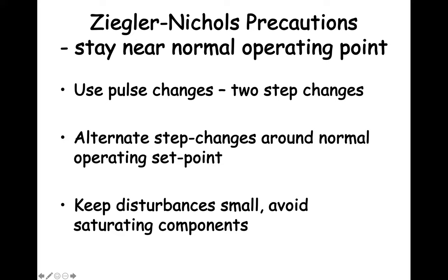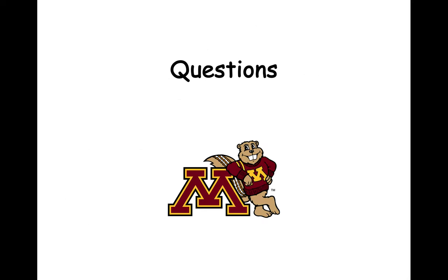When working with real industrial processes, it is important to take some precautions. Here are three recommendations when adjusting a process to collect data to be able to use the Ziegler-Nichols method. Pulse changes are recommended — when you step up to create one step change and step down to create a second step change, by alternating step changes around the normal steady state conditions, you avoid getting far from normal conditions. Also, by using small disturbances, you avoid saturating system components. This brings us to the end of this lecture. Please write down any questions you have and bring them into class.